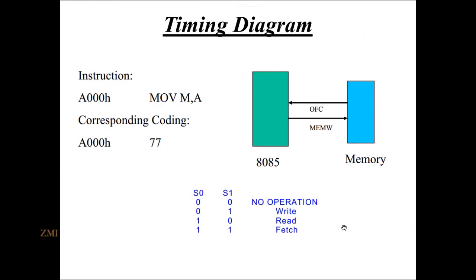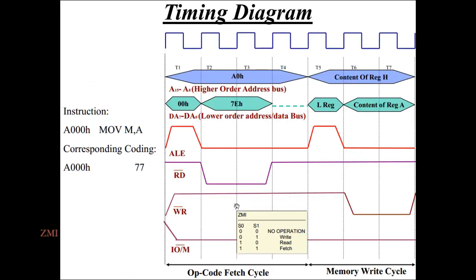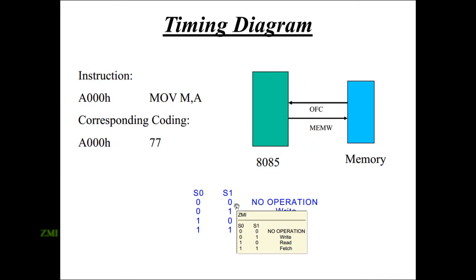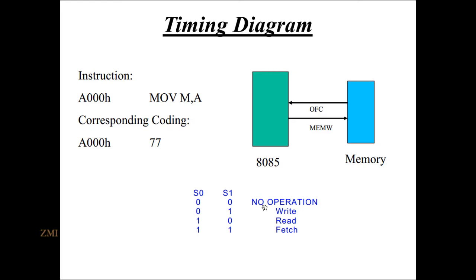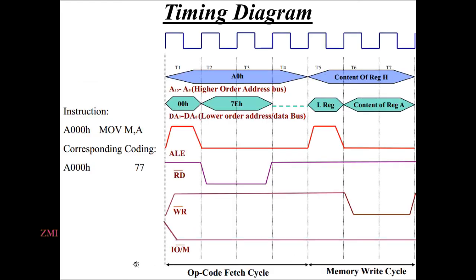Now we need to select S0 and S1. S0 and S1 are used to select read and write by address level. We can see how to read and write. We have to select 0-0, and then select S0 and S1.